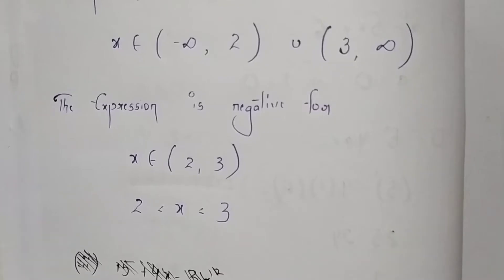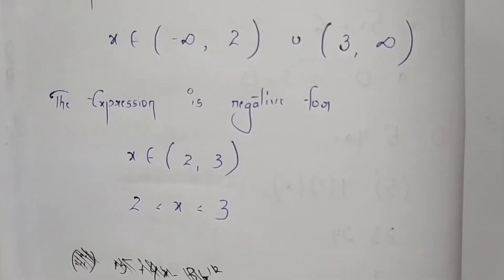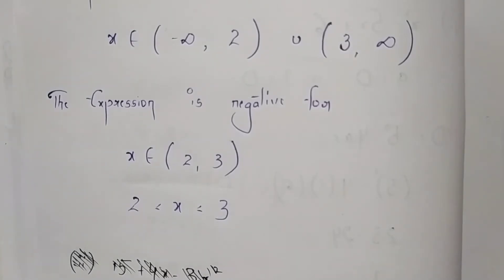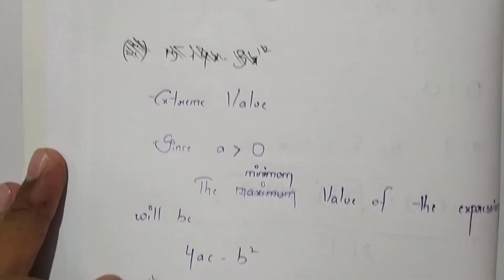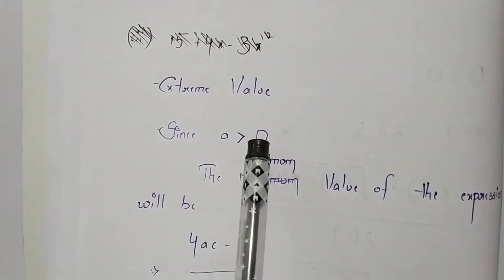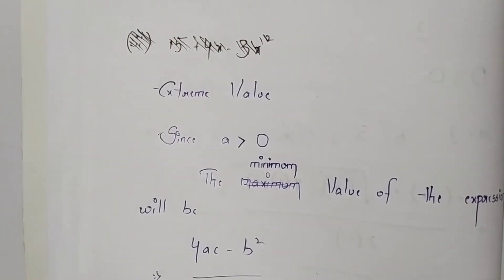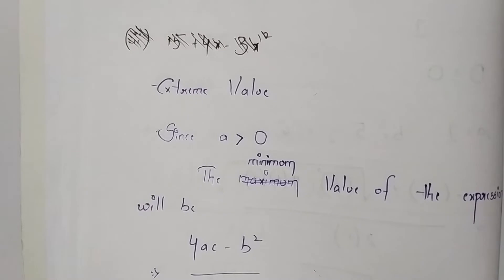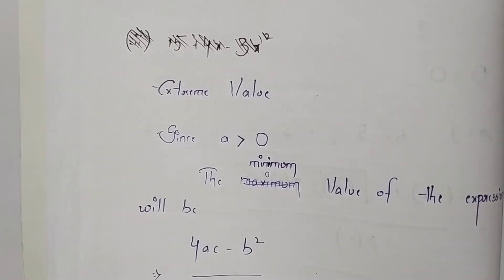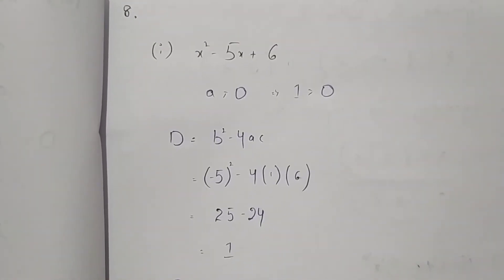Now let us find the extreme values. The extreme value is the minimum or maximum value. If the value of a is greater than zero, then the expression will have a minimum value. If the value of a is less than zero, then the expression will have a maximum value. In our question, the value of a is 1, which is greater than 0.